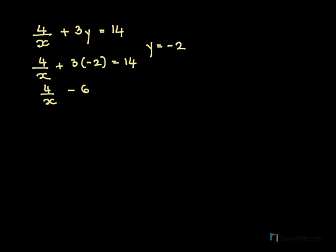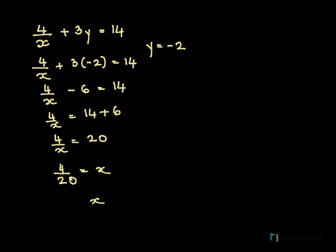4 over x minus 6 equals 14. 4 over x equals 14 plus 6. 4 over x equals 20. We cross multiply and we say 4 over 20 equals x. So x equals 1 by 5. So for our answers, we have x 1 by 5 and then we have y equal to minus 2.